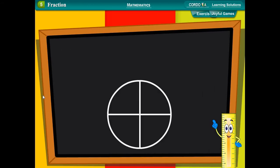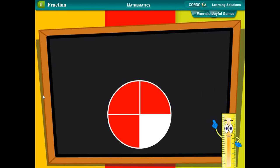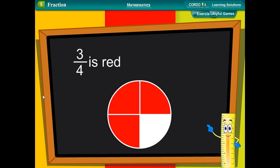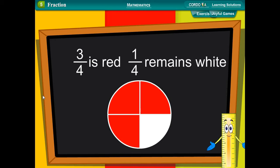In figure 3, a circle has been divided into four equal parts. Three parts out of four, that is, three upon four, is red. In other words, three-fourths is red. One part out of four, one-fourth, that is, one upon four, remains white.